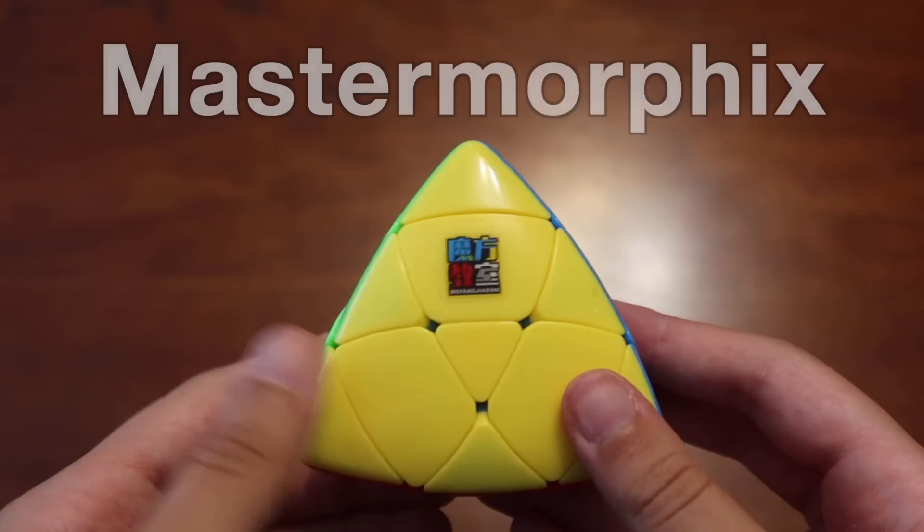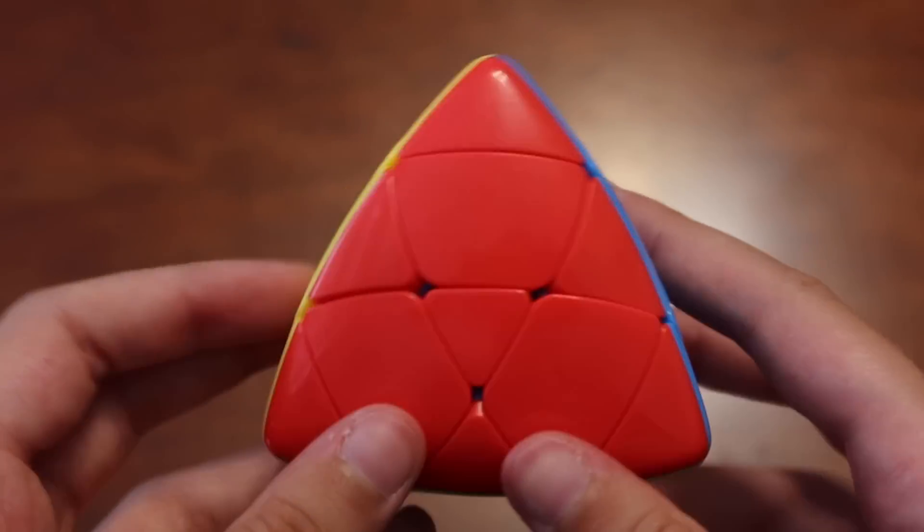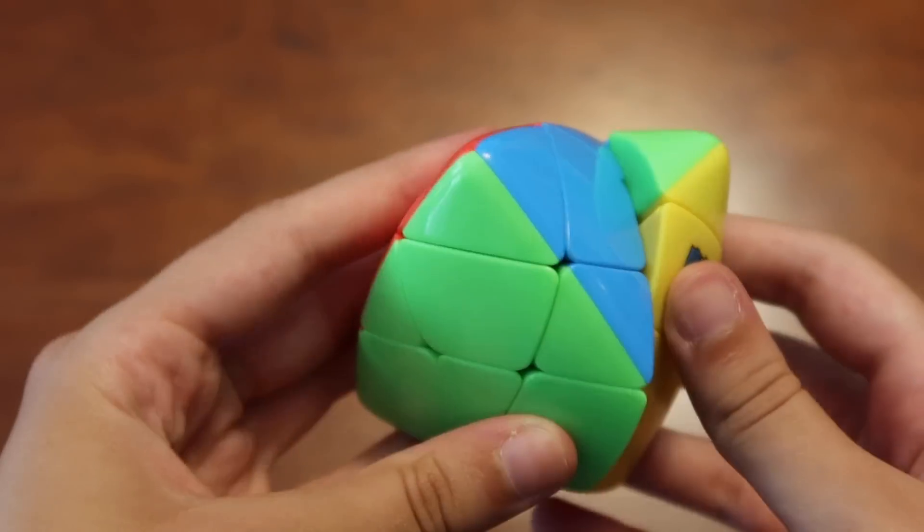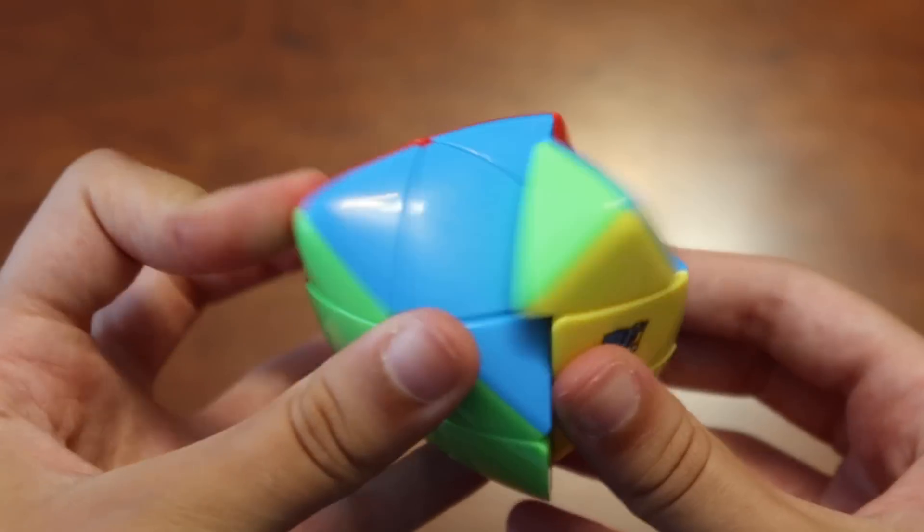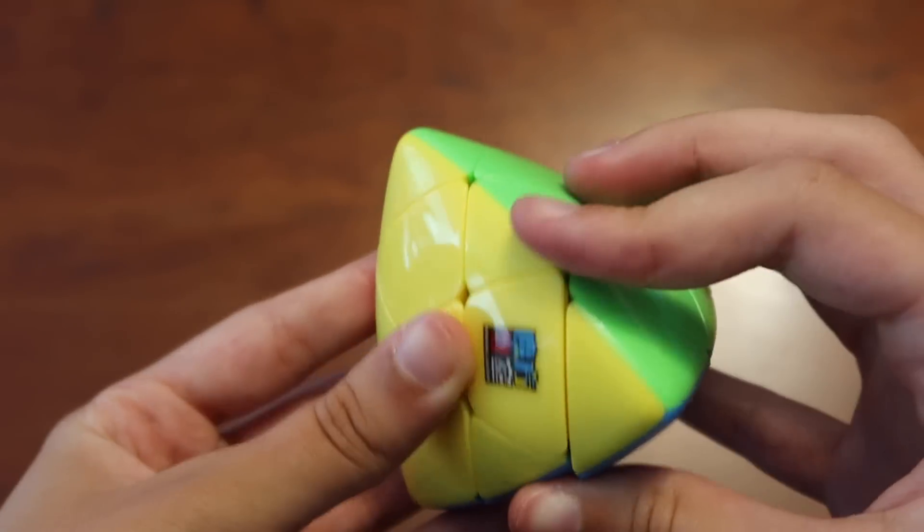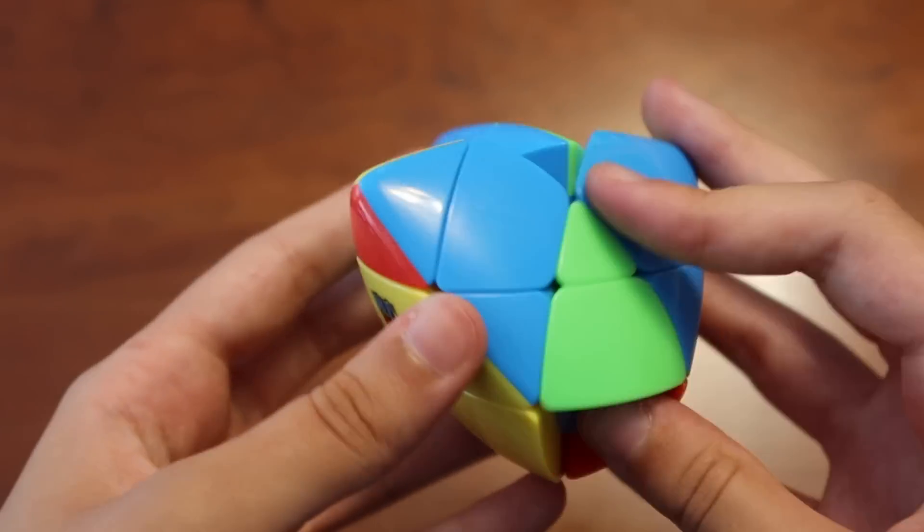And finally, the last cube I want to talk about is the Master Morphix. It's really hard to actually measure how difficult things are, but this is by far the 3x3 mod that I found the most difficult. I don't know why, it is just so confusing to me for some reason, just the way the sides work, and I've been pretty frustrated trying to solve this, so I wanted to include it in this video.